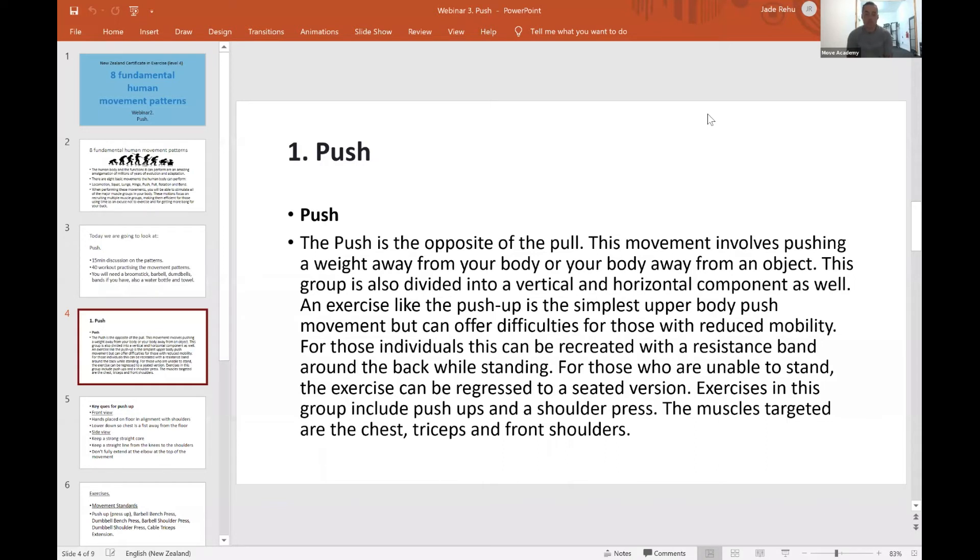There are two planes that this movement works in. One is the vertical, so a vertical push is something like a shoulder press, so vertical being straight up and down. And there's also a horizontal push, which is maybe standing and pushing an object away from you. For example, if you're doing a seated chest press machine, you're doing a horizontal press.